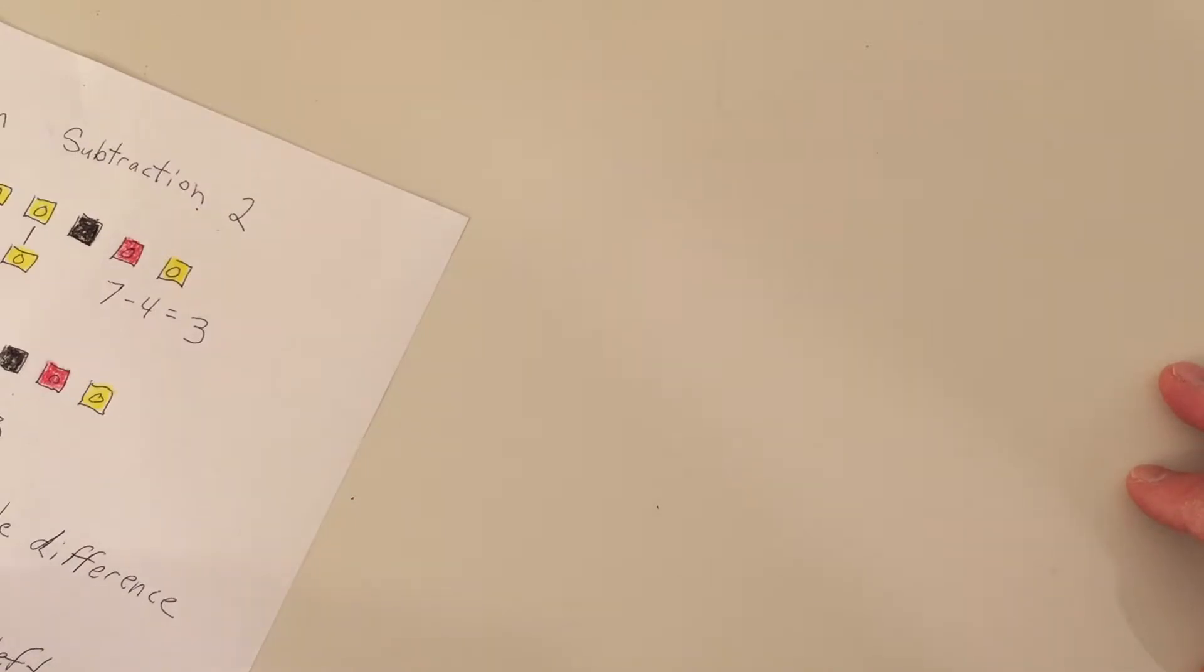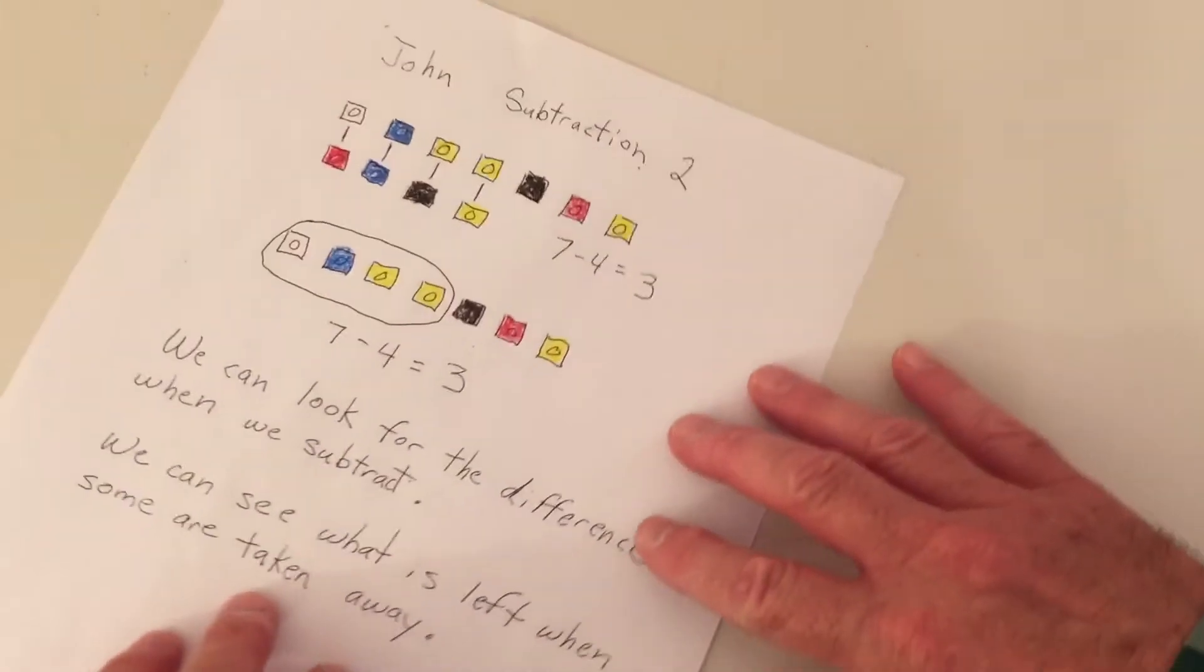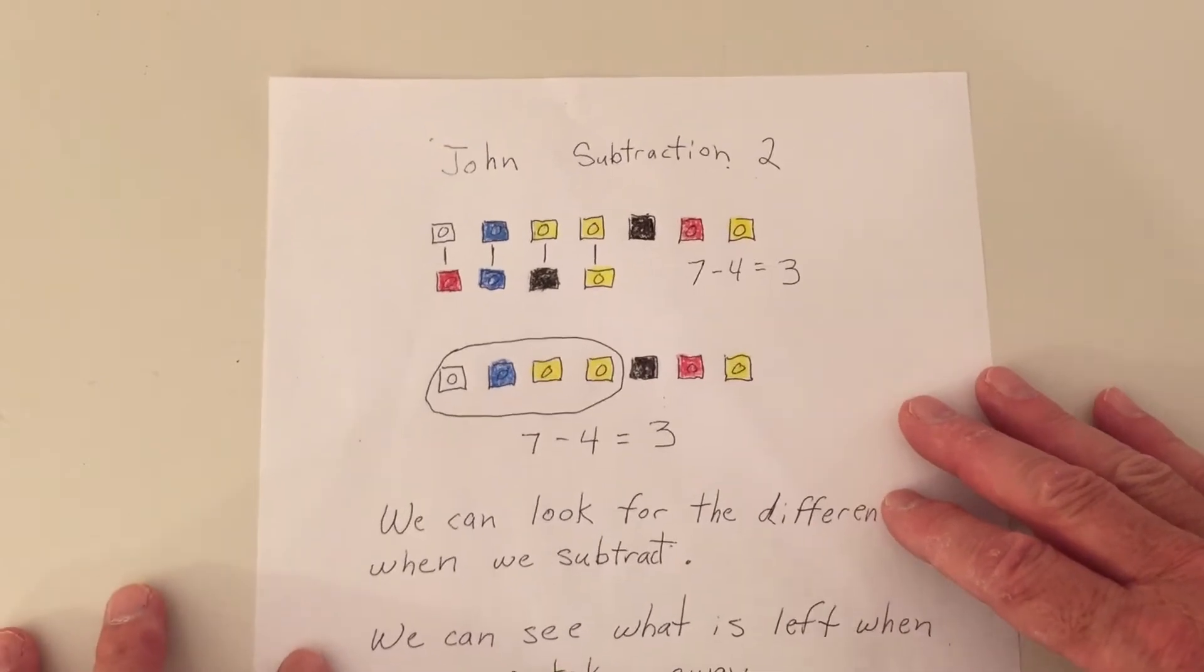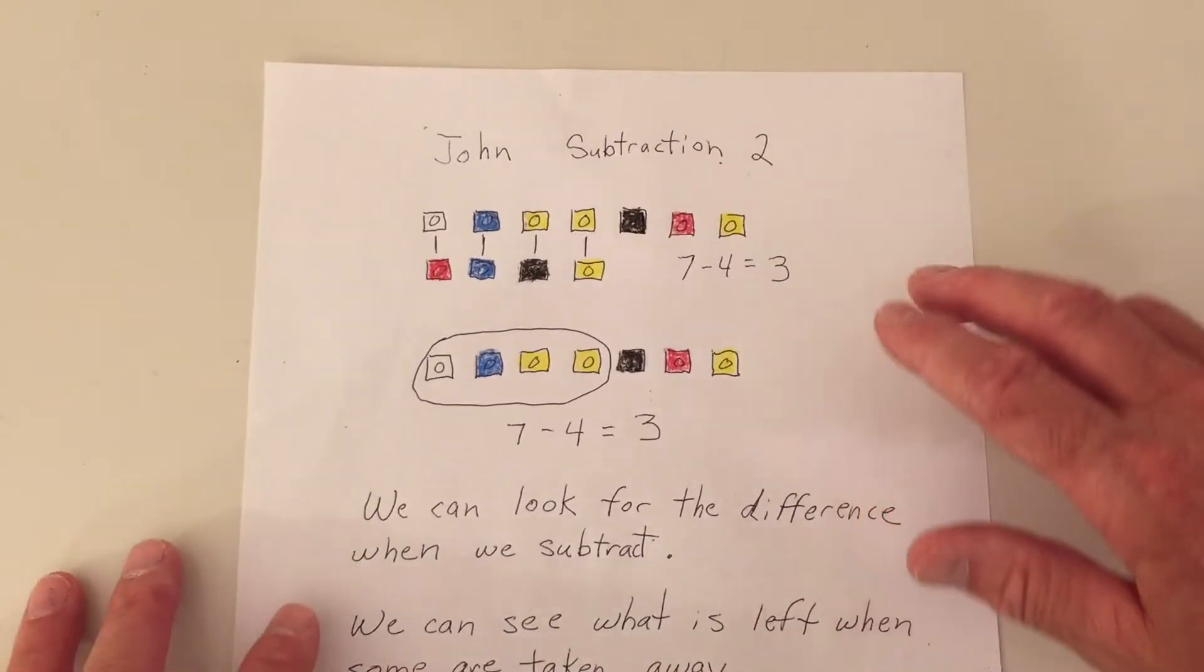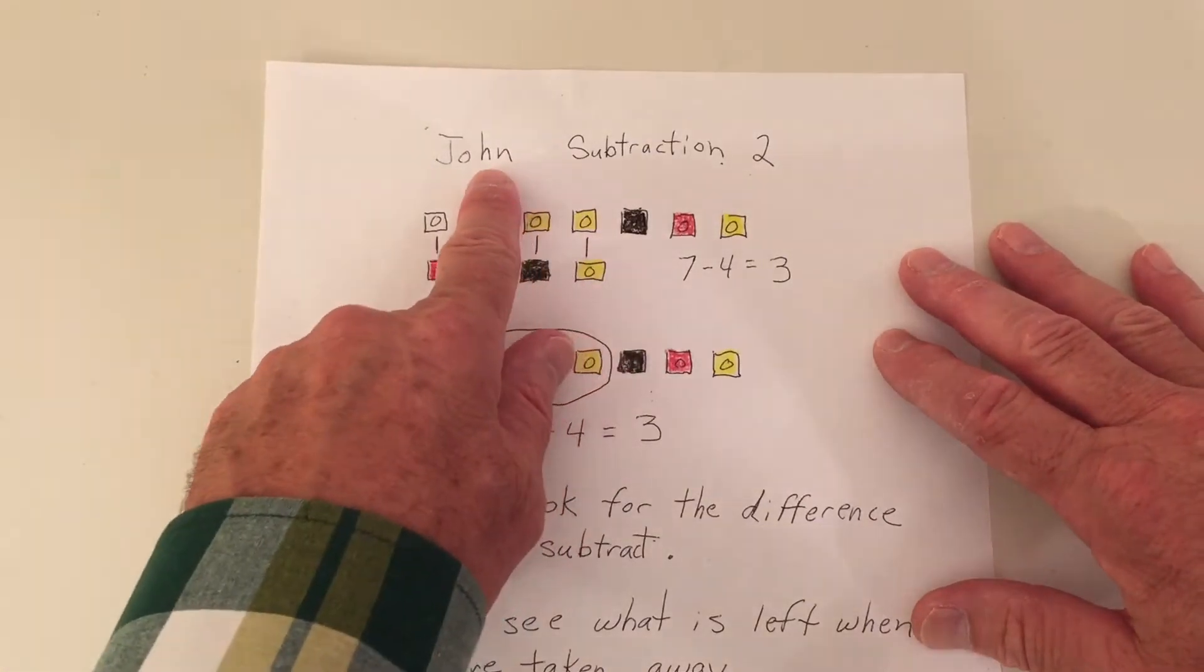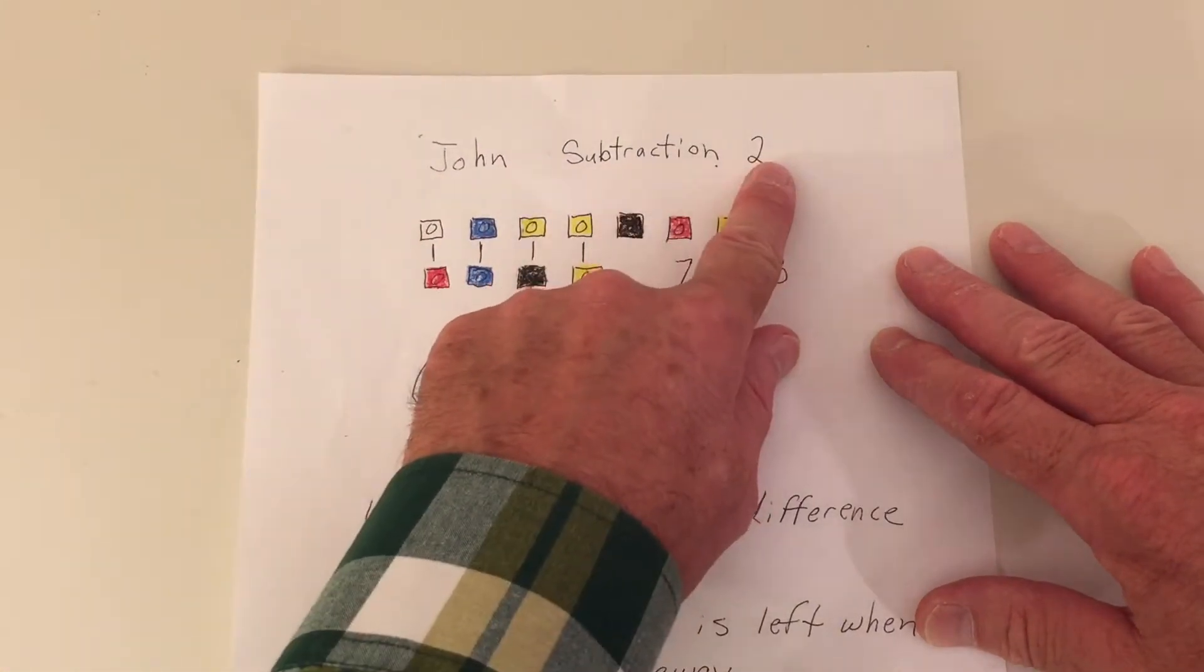Okay, we finished up drawing. So now let's see what we've done. Here's the way I drew it. You can draw it any way you like. My name's at the top and then subtraction number two.